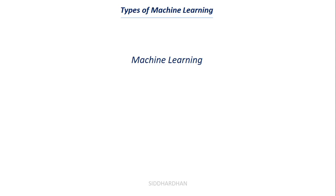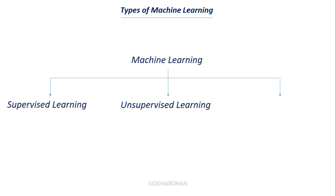Now let's discuss the different types of machine learning. There are three main types: supervised learning, unsupervised learning, and reinforcement learning. In supervised learning there is some supervision to the algorithm by the programmers. In unsupervised learning there is no supervision. Reinforcement learning is completely different and is not directly related to either supervised or unsupervised learning.